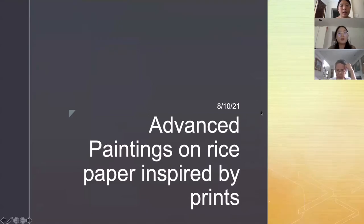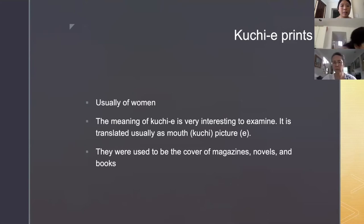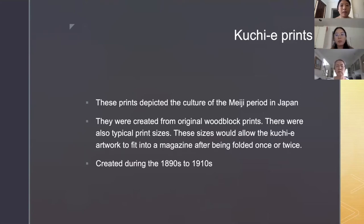Okay — advanced paintings on rice paper inspired by prints. I want to present some information about kuchie prints, which are usually of women. The meaning of kuchie is very interesting to examine — it is translated usually as 'mouth picture.' They were used as covers of magazines, novels, and books, and depicted the culture of the Meiji period in Japan. They were created from original woodblock prints, and there were typical print sizes that allowed the kuchie artwork to fit into a magazine after being folded once or twice.